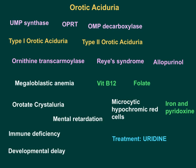Now let's look at orotic aciduria causes, clinical manifestations, and treatment. The inherited orotic aciduria is caused by a defect in UMP synthase, which is a bifunctional enzyme combining OPRT and OMP decarboxylase. If there is a defect in this bifunctional enzyme where both enzyme activities are down, that gives rise to Type 1 orotic aciduria. If there is a defect only in OMP decarboxylase, it gives rise to Type 2 orotic aciduria.